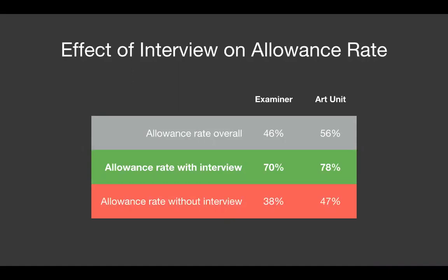Each examiner, art unit, and tech center is different, and practices can vary depending on which examiner you're in front of. While it's interesting to see overall trends at the PTO, I always suggest looking at the particular examiner you're in front of or your prosecution history in the framework of your firm or corporation. The red line at the bottom shows the allowance rate without an interview — it's even worse than the overall rate. If you're not interviewing at some point in prosecution before this examiner, you're actually hurting yourself. For this examiner, I would definitely try to interview.